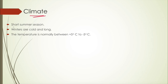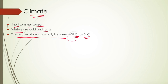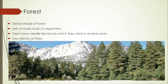The climate in needle leaf forests features a very short summer season. Winters here are cold and long. The usual temperature ranges from a maximum of 5 degrees Celsius to a minimum of minus 5 degrees Celsius, varying by region. These forests have a dense shade of trees, making the understory quite dark.